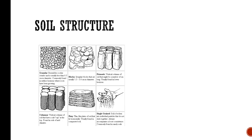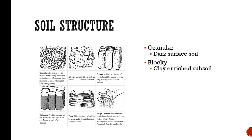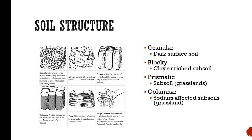Soil structure has different types. Granular soil structure you're going to see in a dark surface soil. Blocky you're going to see in a clay-rich subsoil — and you can see that's not a great way for water to penetrate. Prismatic would happen in the subsoil of grasslands. Columnar are vertical columns of soil that happen in more of a salty grassland situation. Platy is an alluviated subsoil, usually found in compacted soil — and you can see water is not going to really move through that.